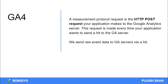We send raw event data to GA servers via a hit. That means that whatever activity is on the website — as an event hit is available — you can pass it and send an HTTP POST request to the server. The GA server then processes that basic data.